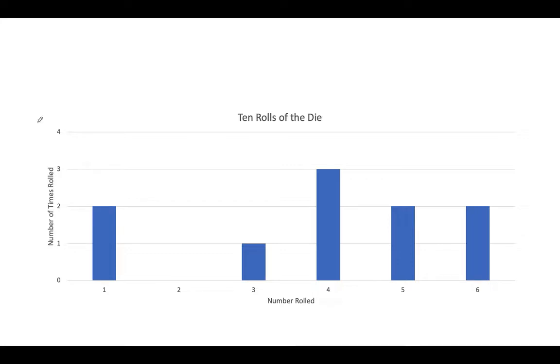So I made a graph about that. That's what this looks like here. So you can see I've got two ones, zero twos, one three, three fours, and then two fives and two sixes. Notice I put all of my titles in there, the number of times I rolled, the number on the die, and this is my title: 10 rolls of the die.